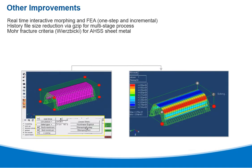Other improvements to Hyperform 11.0 include real-time interactive morphing and FEA for one-step and incremental analysis, history file size reduction via GZIP for multi-stage processes, and more fracture criteria for AHSS sheet metal.